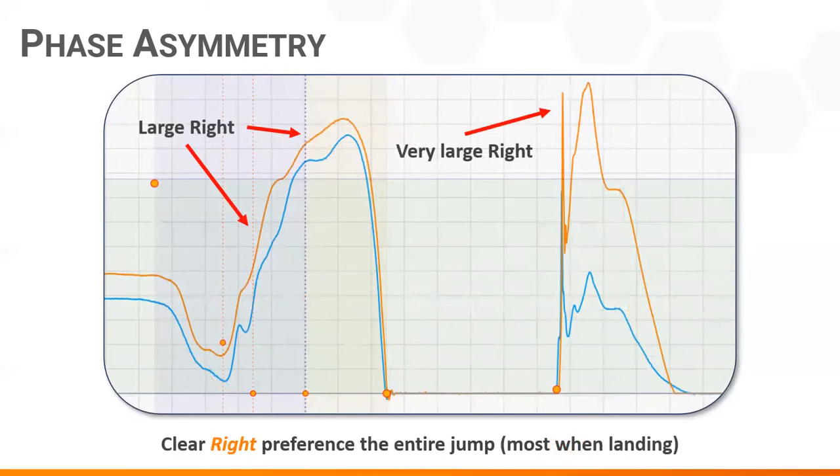Here we see a very clear right sided dominance. Even before the movement begins, this individual is leaning onto the right side. So eccentric, concentric, and especially landing, we see a very large right sided preference the entire jump through.